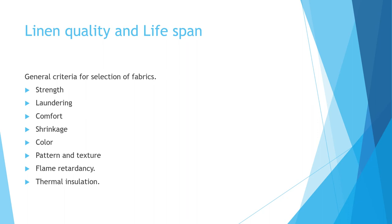For color, white is the universal color for bed sheets and towels. Other colored linen — such as curtains, restaurant linen, or banquet linen — should not undergo color fading after repeated washes, retaining its appearance until the last use. Regarding pattern and texture, geometric patterns and minor floral designs are generally chosen for restaurants and curtains, and the texture should be very soft and comfortable.